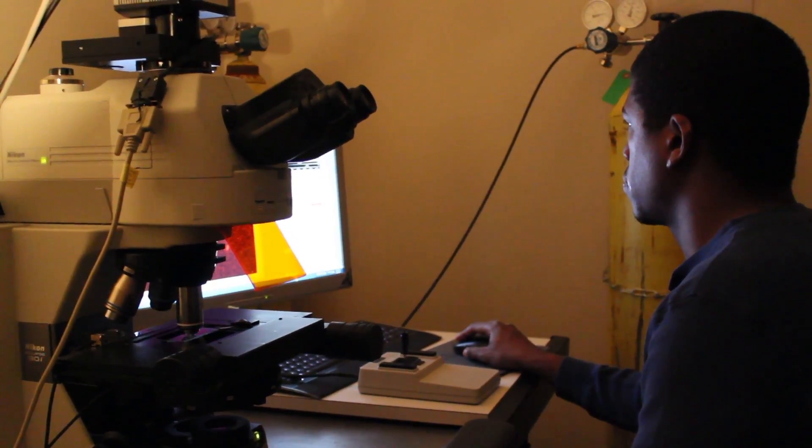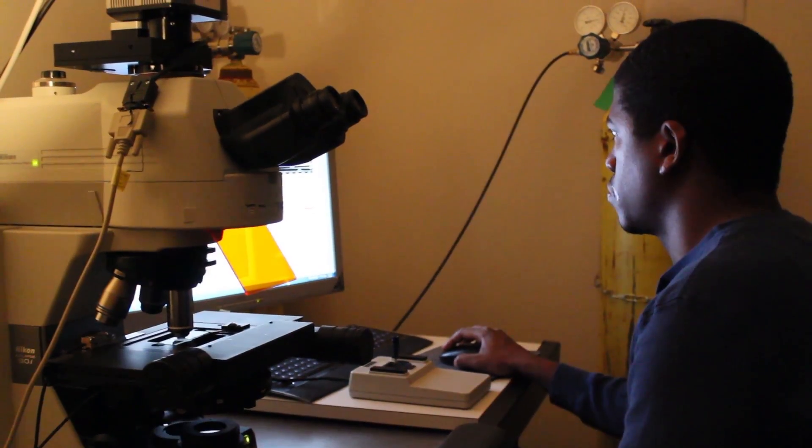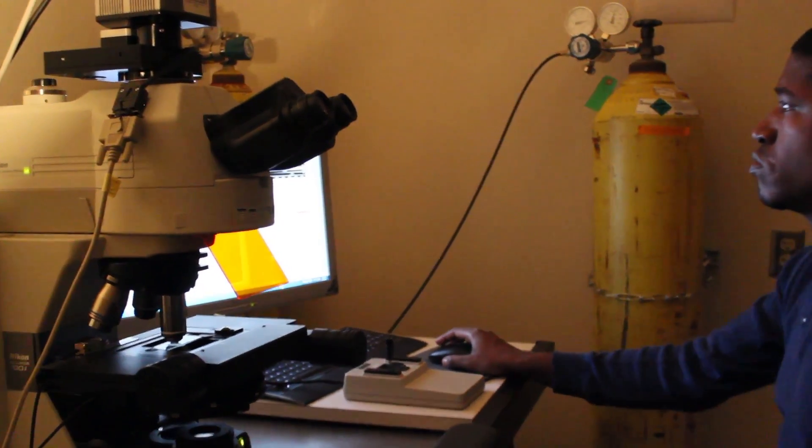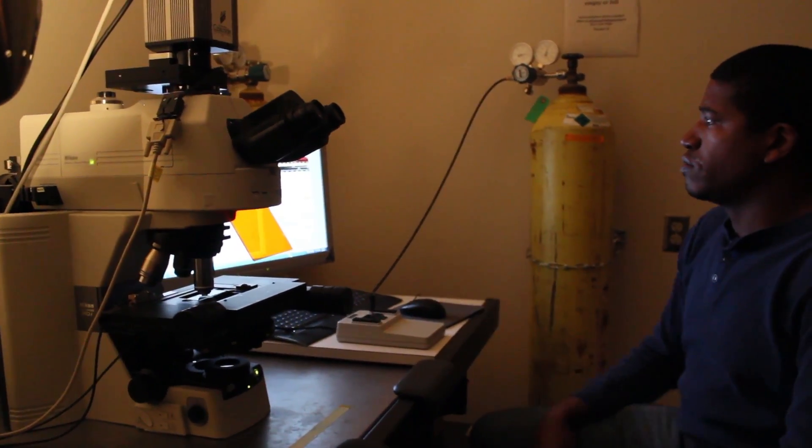And you set different positions. The scope will move to the different positions, and it will take a picture every five minutes. After a few hours, you come back and you play the movie, and you have frames of your bacteria growing, and every frame is a five-minute jump. So you can watch them grow and divide in 10 seconds, even though the movie was taken over a span of six hours or something like that.